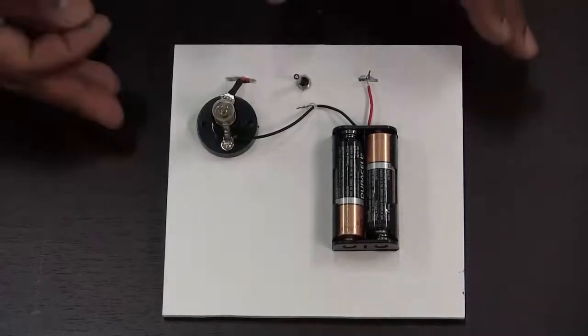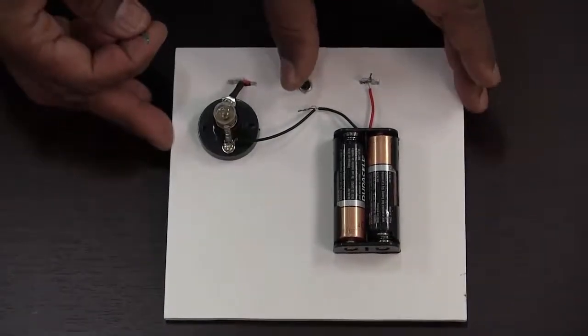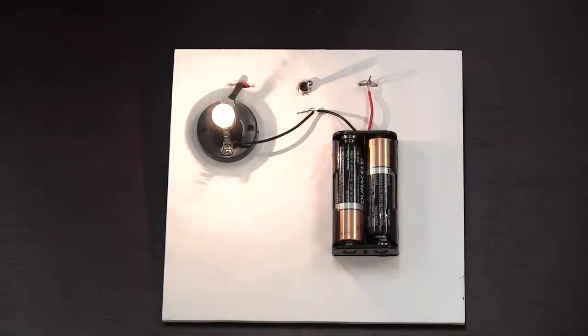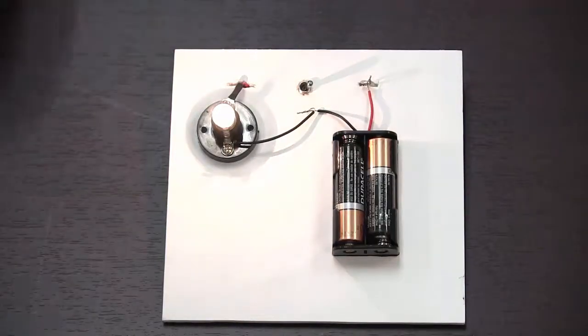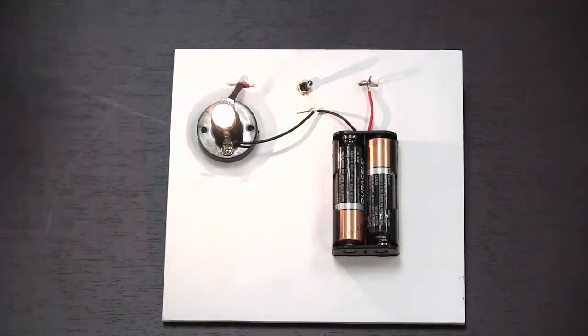Here, I have the same circuit shown in the diagram fully assembled. The bulb is lighting up because electrical current flows through the circuit from the battery through the bulb.